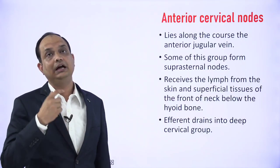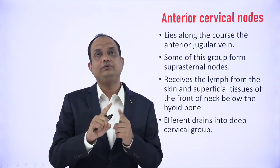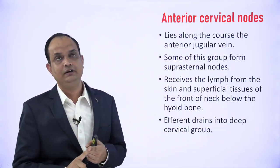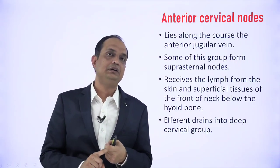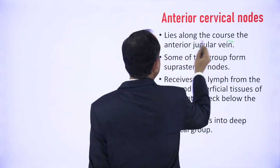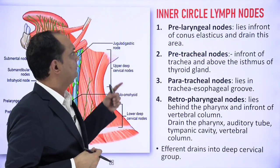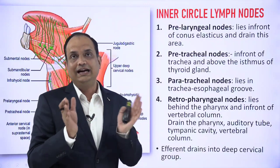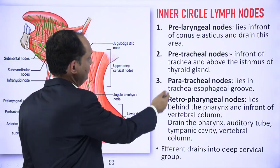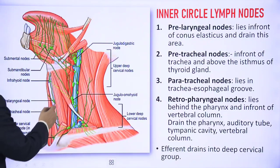Regarding the jugular veins and lymph nodes: the internal jugular vein has the deep group of lymph nodes; the external jugular vein and anterior jugular vein have the superficial group. The inner circle of the superficial group is present around the upper end of the respiratory and alimentary tract, with four main groups: pre-laryngeal, pre-tracheal, paratracheal, and retropharyngeal.